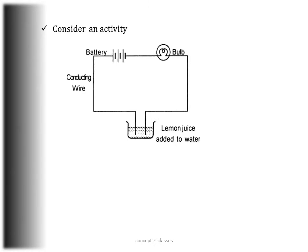To understand how liquids conduct electricity, let's consider an activity. Take any liquid — let it be lemon juice or vinegar — inside a beaker. Using the same tester apparatus, the free ends of the tester should be dipped inside the liquid. There should be sufficient distance between the two ends so they do not touch each other.